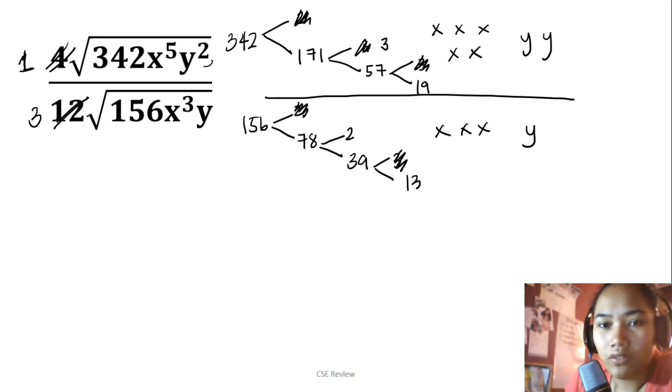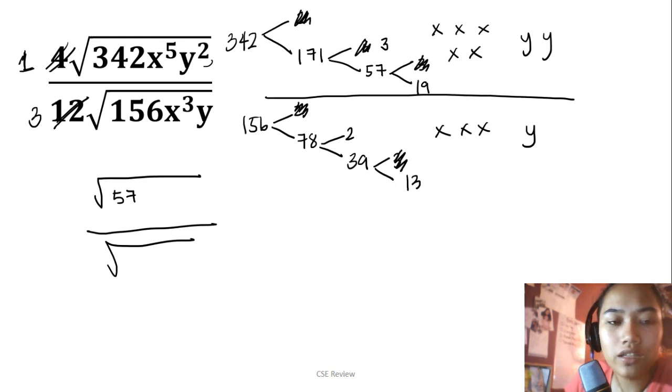We can't do anything more with those. So the final answer on top will have 3 times 19 remaining. What's 3 times 19? That's 57 for the number on top. On the bottom, we left the 3 from earlier, and then you have 2 times 13, which is 26. That 26 will remain there because they don't have pairs.